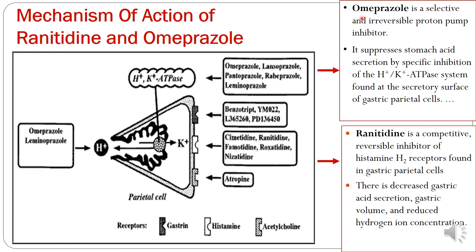Omeprazole is a selective inhibitor of hydrogen-potassium ATPase. It inhibits this pump so HCl cannot be pumped out into the gastric lumen, and therefore hydrochloric acid formation is stopped. This is an irreversible mechanism that suppresses stomach acid secretion by parietal cells. Ranitidine is a competitive inhibitor that acts on the histamine receptors; it blocks the receptor, resulting in decreased gastric acid secretion with reduced volume and reduced hydrogen ion concentration.